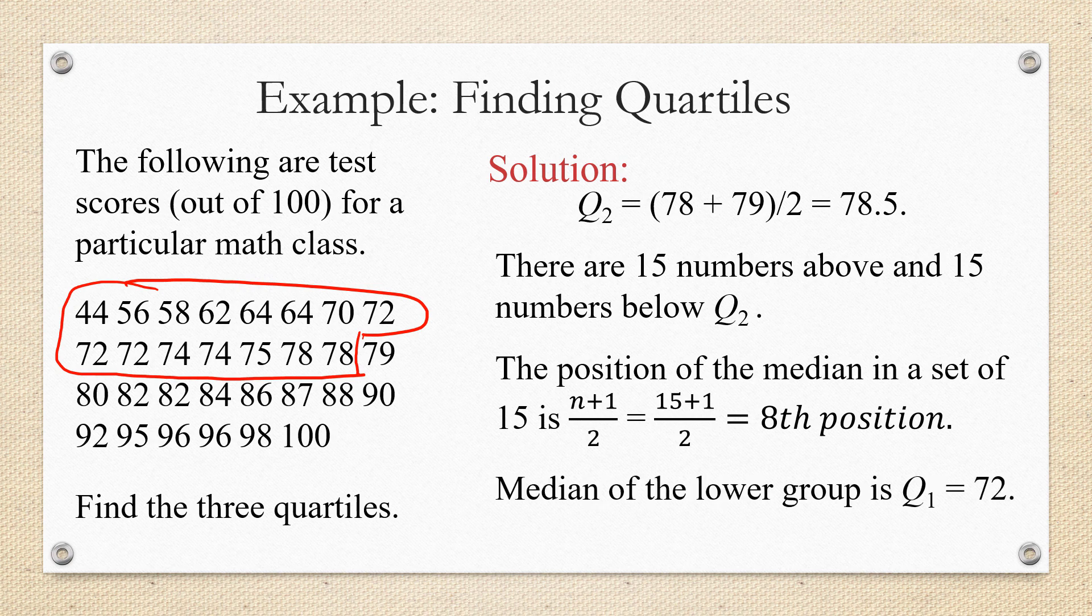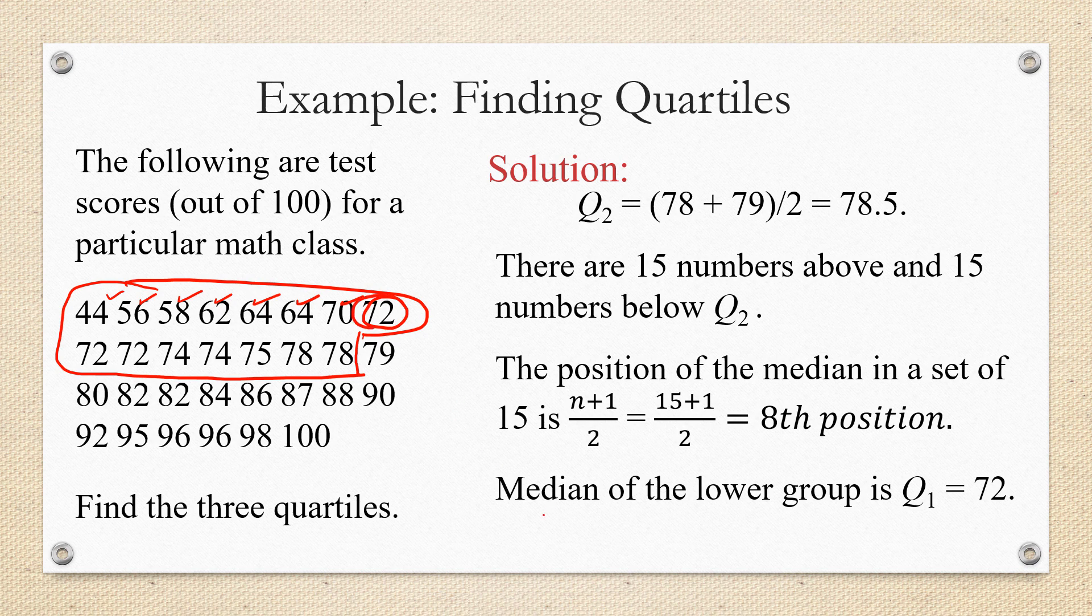So amongst the bottom 15, we're looking at the 1, 2, 3, 4, 5, 6, 7. The eighth position is 72. So Q1 is 72.